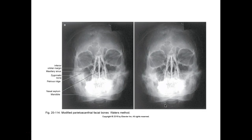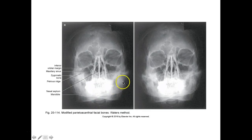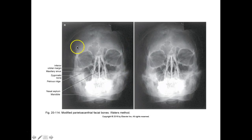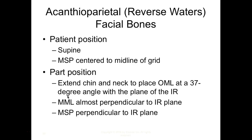On the modified Waters you can see the orbits really well, with petrous ridges about halfway up the maxillary sinuses — a little much, ideally lower one-third. Labeling includes inferior margin of orbits, maxillary sinus, zygomatic bone, petrous ridge, nasal septum (vomer and perpendicular plate), and mandible. Collimation should be very tight; this image is not well collimated, and the scatter is degrading image quality, making fractures hard to identify.